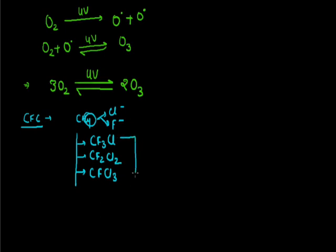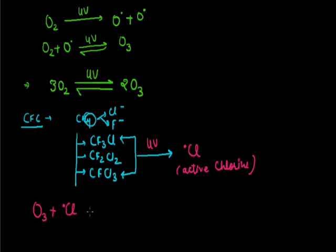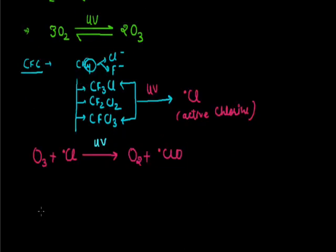In the presence of ultraviolet rays, they will emit nascent chlorine or active chlorine. This will react with ozone and degrade it into oxygen. In the presence of UV rays, active chlorate will form after degradation and will do the same phenomena.